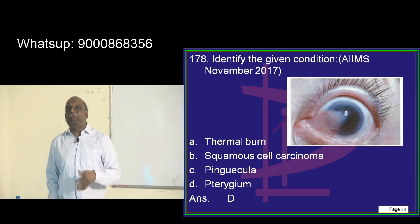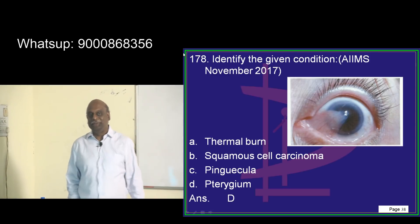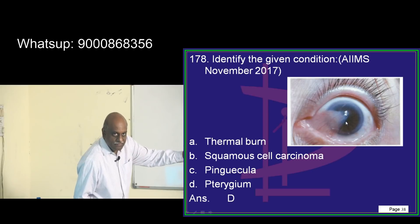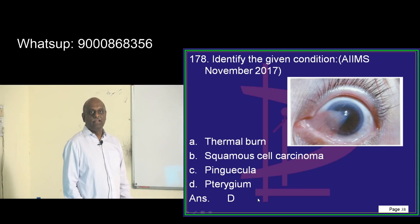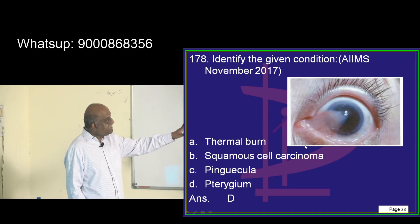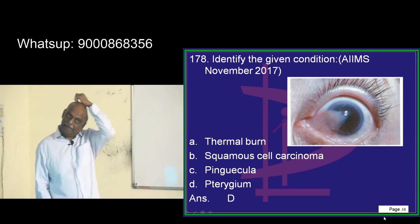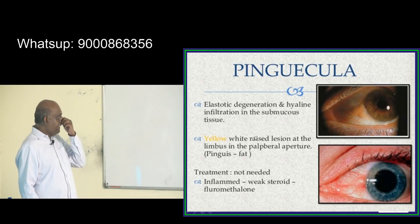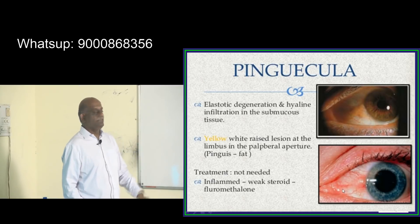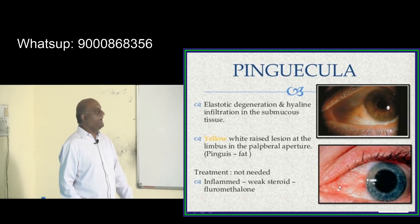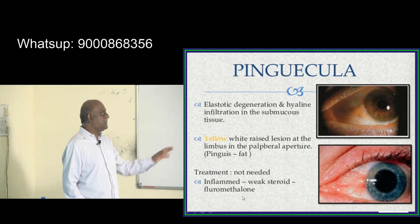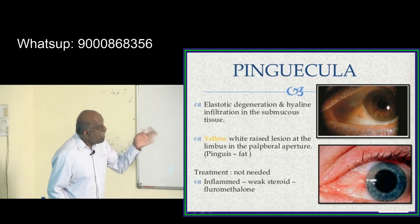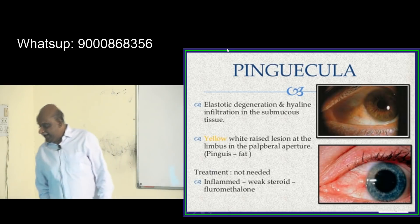How do you differentiate pterygium from pinguecula? If this lesion is crossing the limbus, then it is pterygium, whereas pinguecula doesn't cross the limbus. Pinguecula is an elastotic degeneration — a yellow-white raised lesion and treatment is not needed. If it is very much inflamed, a weak steroid like chloromethalone can be administered, but generally it is self-limiting.